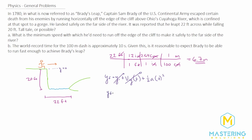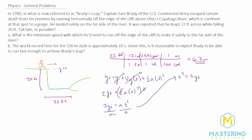So y final equals one-half the acceleration times t squared. We multiply both sides by 2 to cancel the one-half, giving 2 times y final equals acceleration times t squared. Dividing both sides by a, we get t squared equals 2 times y final divided by acceleration. Taking the square root of both sides: time equals the square root of 2 times y final divided by acceleration.